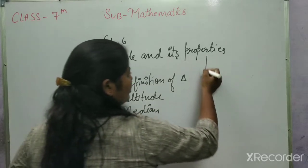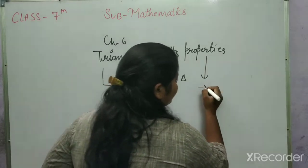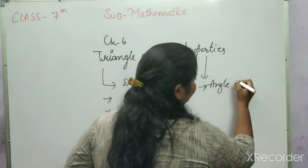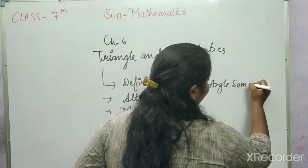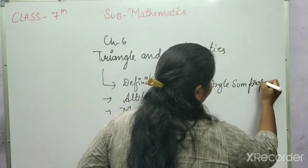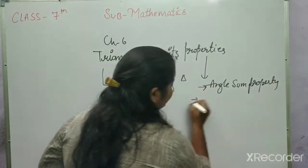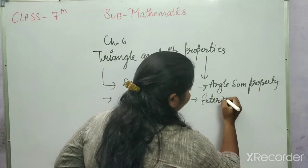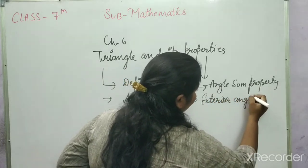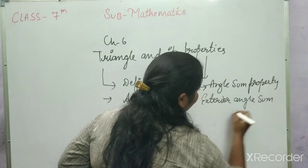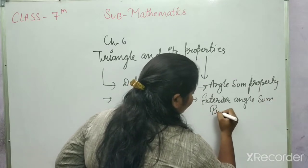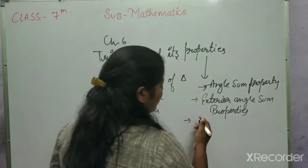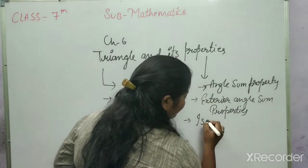And some properties related to Triangle. First, Angle Sum Property. Second, Exterior Angle Sum Property. Third, Isosceles Triangle sum property.